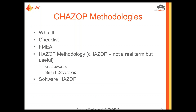Looking at the methodologies and techniques that can be used: typically we'd consider what-if, checklist, and FMEA — extended to FMEDA for OEMs as a special case. There's also a HAZOP methodology — I'll use the nomenclature lowercase c-HAZOP, meaning a HAZOP-type methodology. Within that, there are two distinctions: a general technique using guide words, and something called smart deviations. We can also have a software HAZOP depending on the type of equipment. Importantly, you may use one or more of these techniques in any given project.